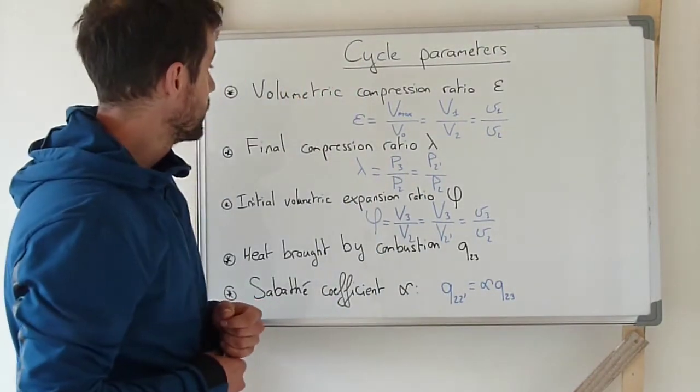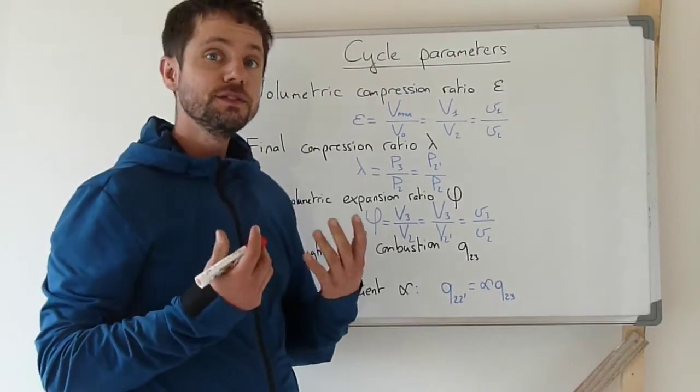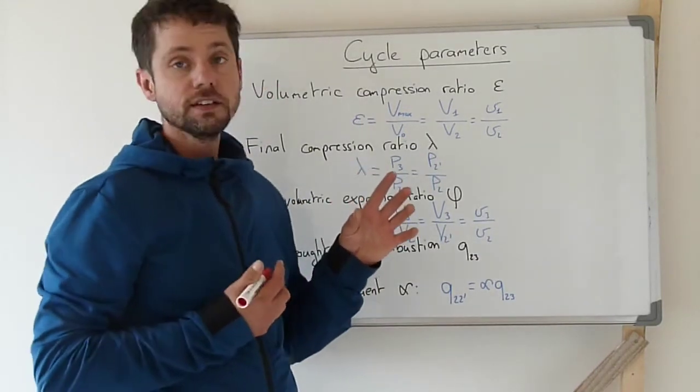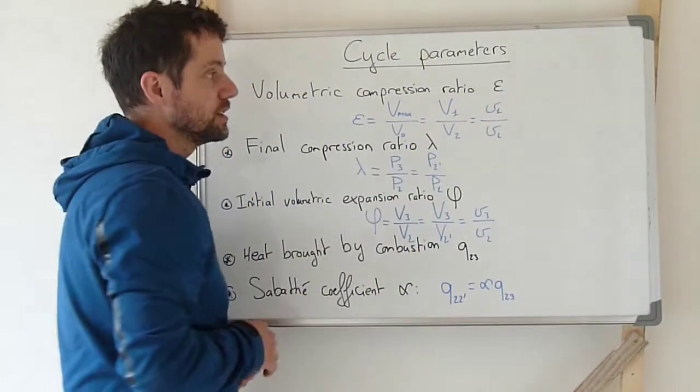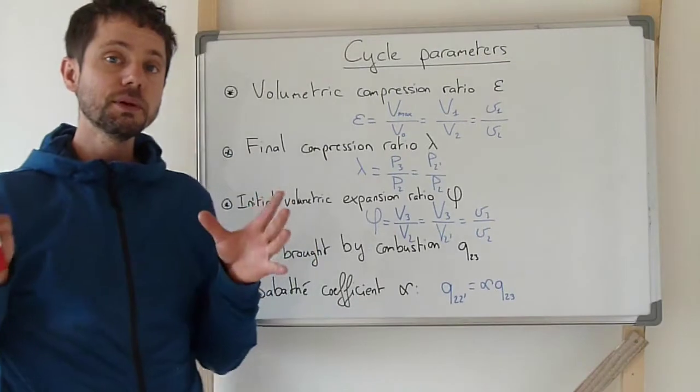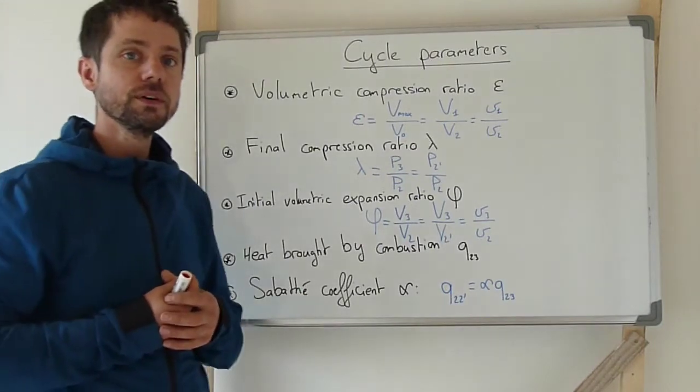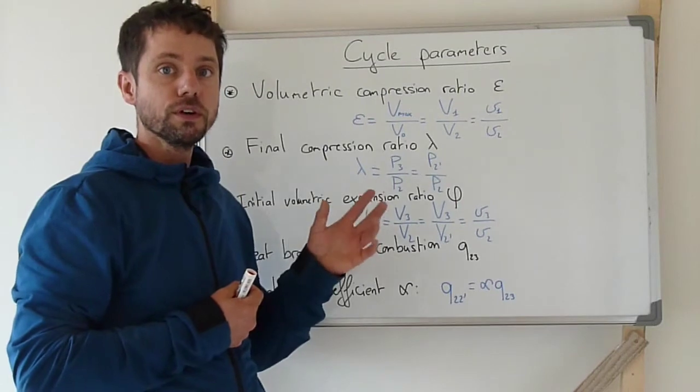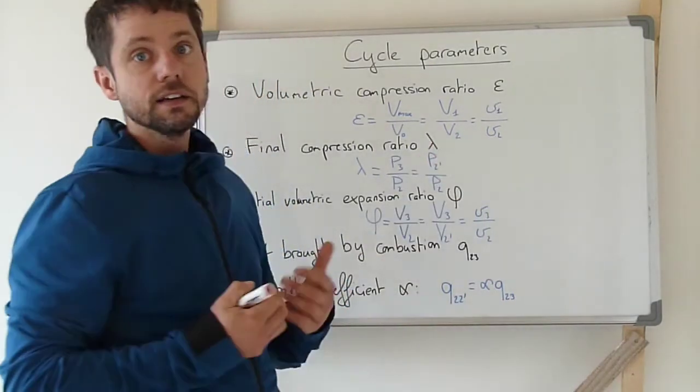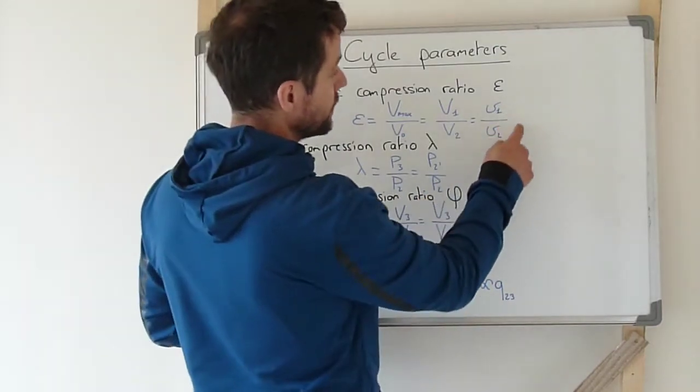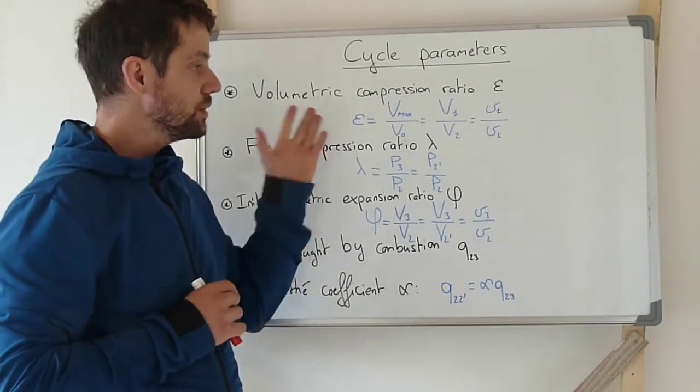One that we have already used several times, especially one that differentiates the spark ignition and compression ignition cycles, is the volumetric compression ratio. It is usually written with the letter epsilon (ε) and it's the ratio between the maximum volume inside the cylinder divided by the clearance volume. With the numbering of the key points that we have used for all three different kinds of theoretical cycles, this will correspond to V1 over V2, and it can also be written with the specific volumes because the mass remains constant during these transformations.